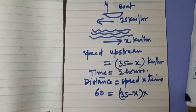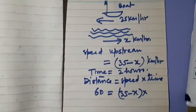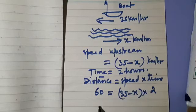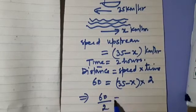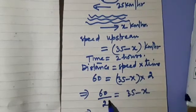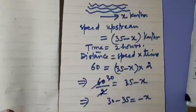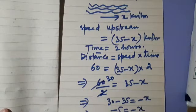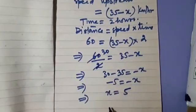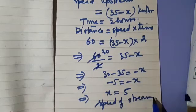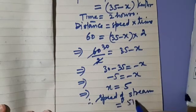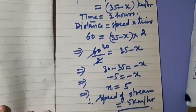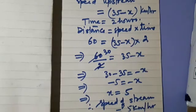The time given is 2 hours. In the upstream situation, the boat normally takes more time. So: 60 divided by 2 is equal to 35 minus X, which gives 30 equals 35 minus X, so minus 5 equals minus X, therefore X equals 5. So X is the speed of the stream, and therefore the speed of stream is equal to 5 kilometers per hour.